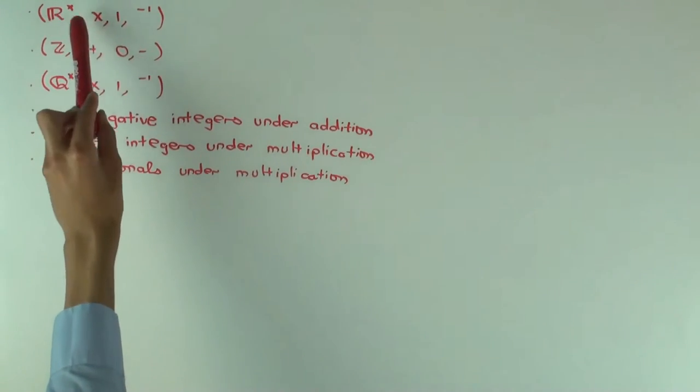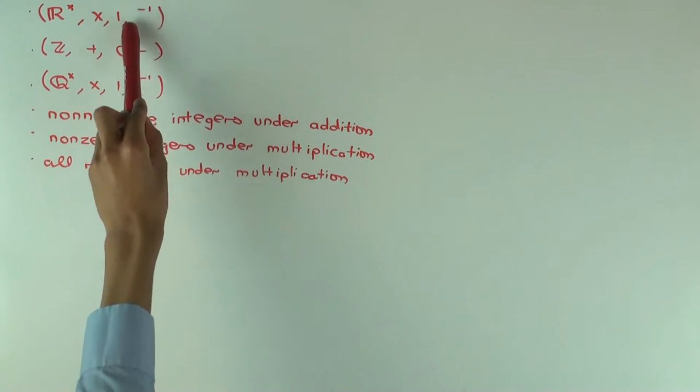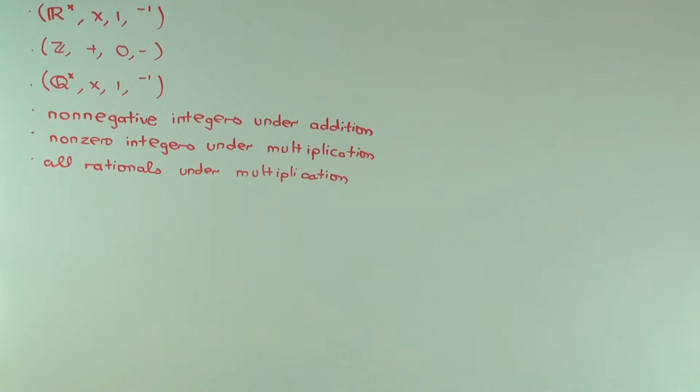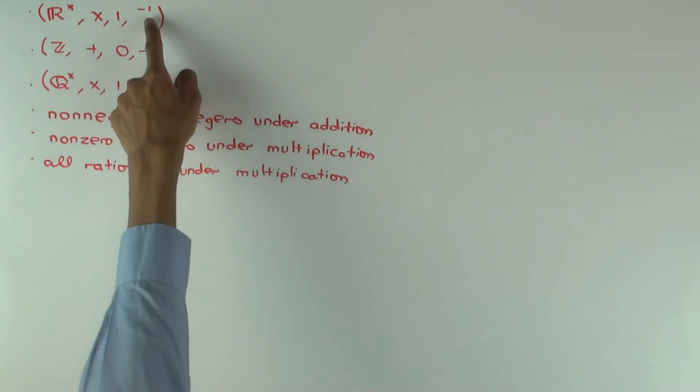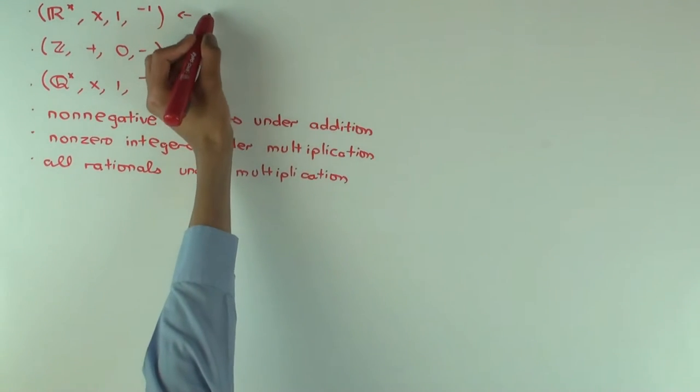This means non-zero reals under multiplication with identity element 1, and where the inverse operation is just the usual multiplicative inverse for a real number. Do you see why we have to make do with non-zero real numbers? Zero doesn't have a multiplicative inverse. Exactly. Do you think this is a group? Well, you go over the checklist mentally. Is it associative? Yes. Is 1 an identity element? Yes. Is this inverse operation, the reciprocal, the 1 over x operation, a multiplicative inverse for multiplication? Yes. Okay, so yes, it's a group.